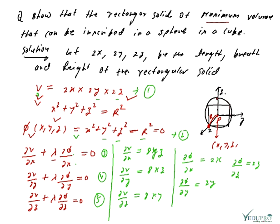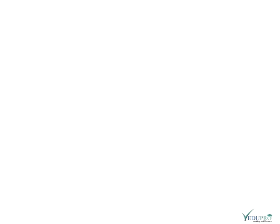Now we substitute these partial derivatives into equations 3, 4, and 5. From equation (3) we get a relation, from equation (4) we get a relation, and from equation (5) we have: 2λz = −8xy.